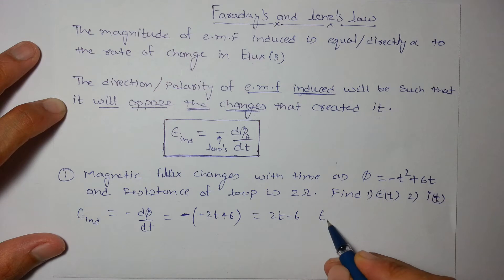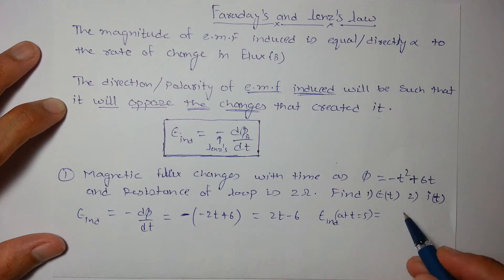For example, induced EMF at t = 5, so it will be 2 × 5 = 10, minus 6 = 4 volts.